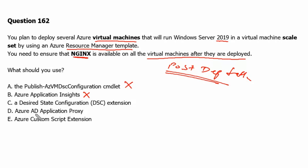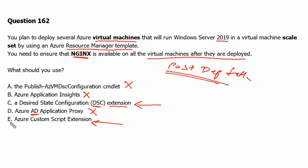Option D is Azure Active Directory Application Proxy — now renamed to Azure Entra Application Proxy — which provides secure remote access to on-premise web applications. It has nothing to do with deployment. This question is available online with two different correct answers: one version lists the Desired State Configuration extension as the correct answer, and another version lists the Azure Custom Script Extension as Option E.